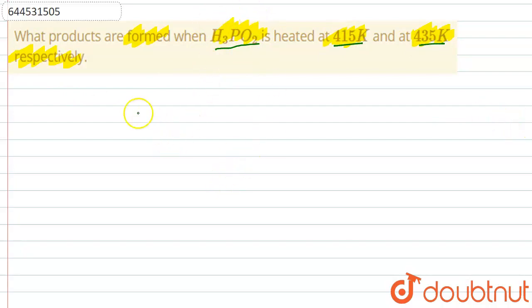So if we write down the reaction: H3PO2, when it is heated at 415 Kelvin, the products formed will be PH3, that is phosphine, and H3PO4, that is phosphoric acid.